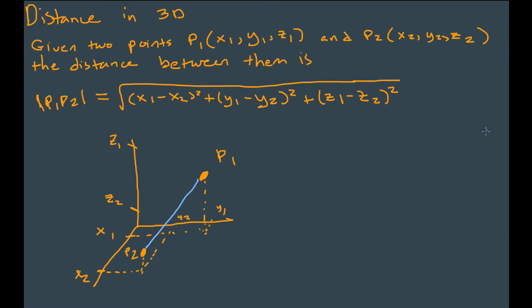Today we're going to talk about distance between points in three-dimensional space. Let's say we have two points P1 and P2. We want to find the straight line distance between those two points — that blue line right there would be representing the distance between those two points.